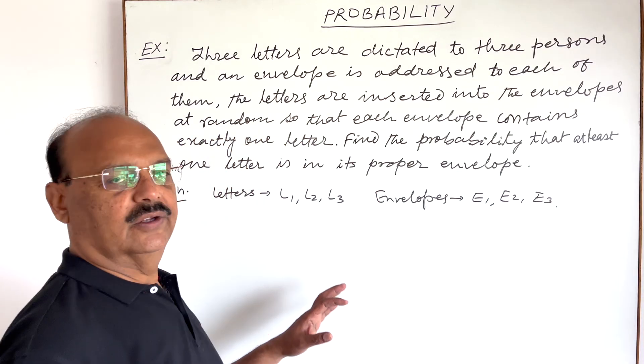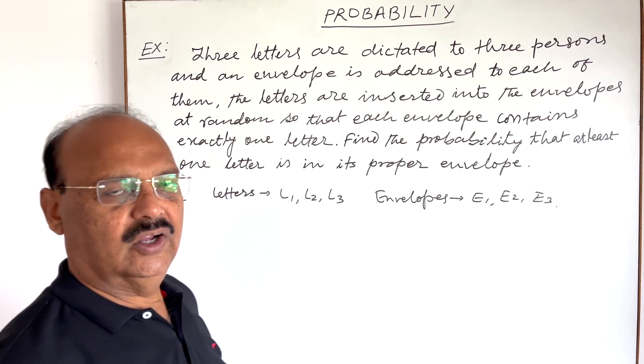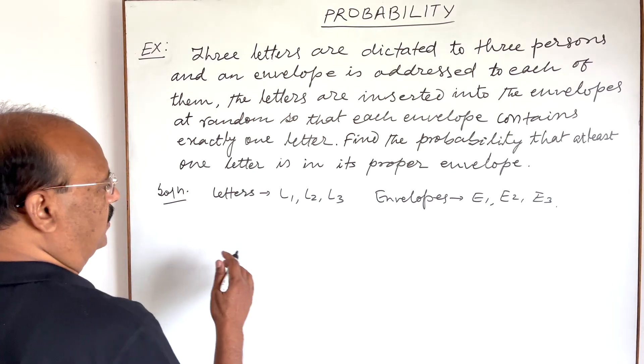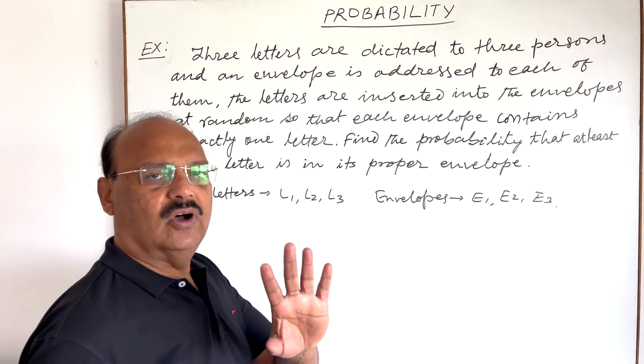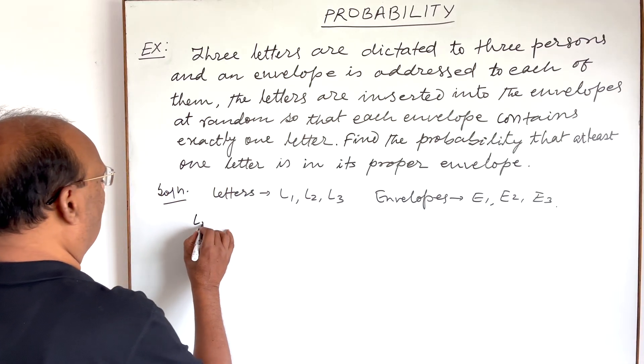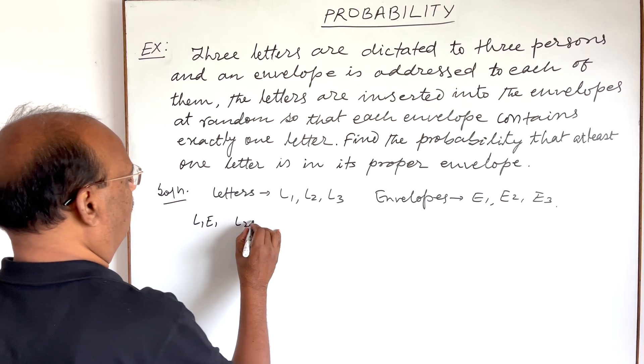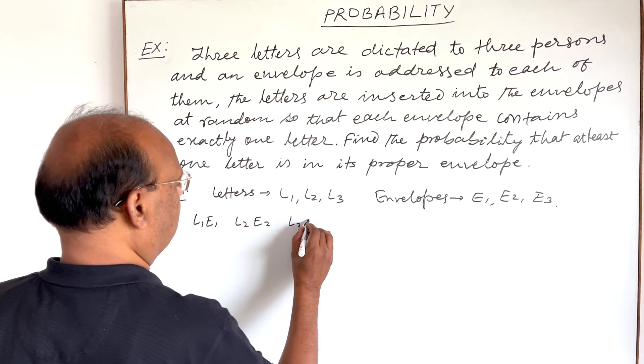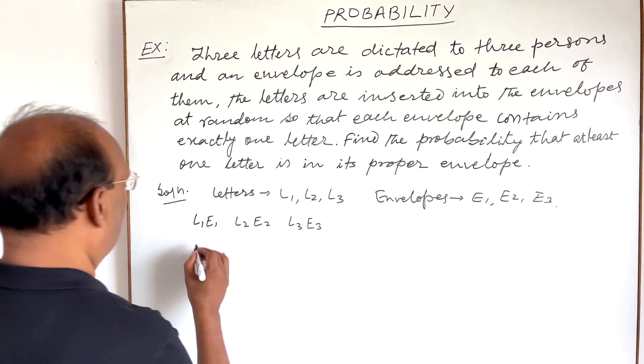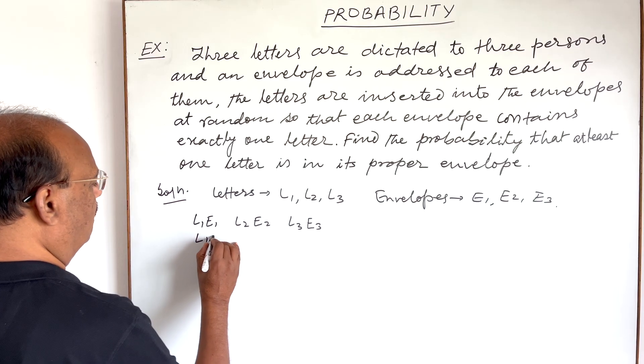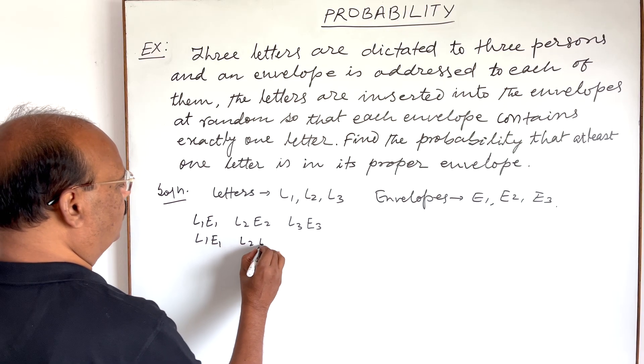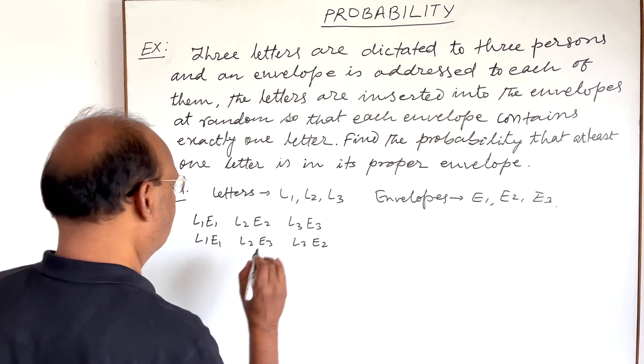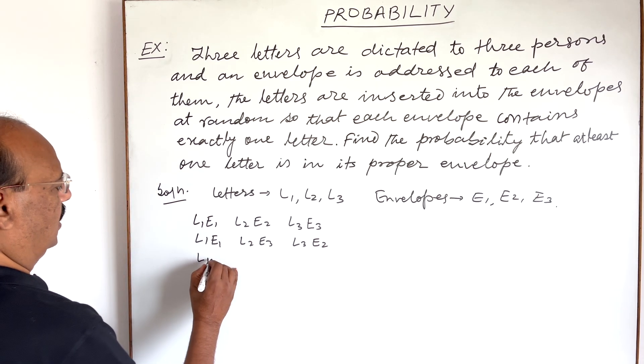Now let us see the possibilities for combinations of letters in different envelopes. There are a total of six options. The first option is L1 in E1, L2 in E2, L3 in E3. The second option is L1 in E1, L2 in E3, L3 in E2.